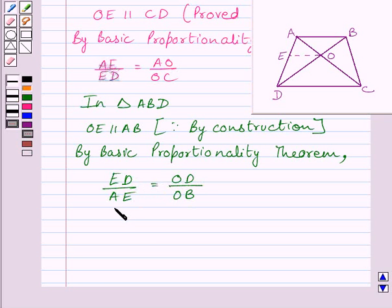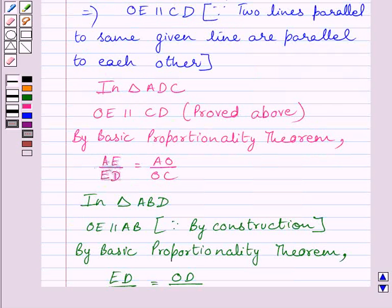Now, taking reciprocal of both the ratios, we get AE upon ED is equal to OB upon OD. In triangle ADC, AE upon ED is equal to AO upon OC. Let us name this expression as 1.